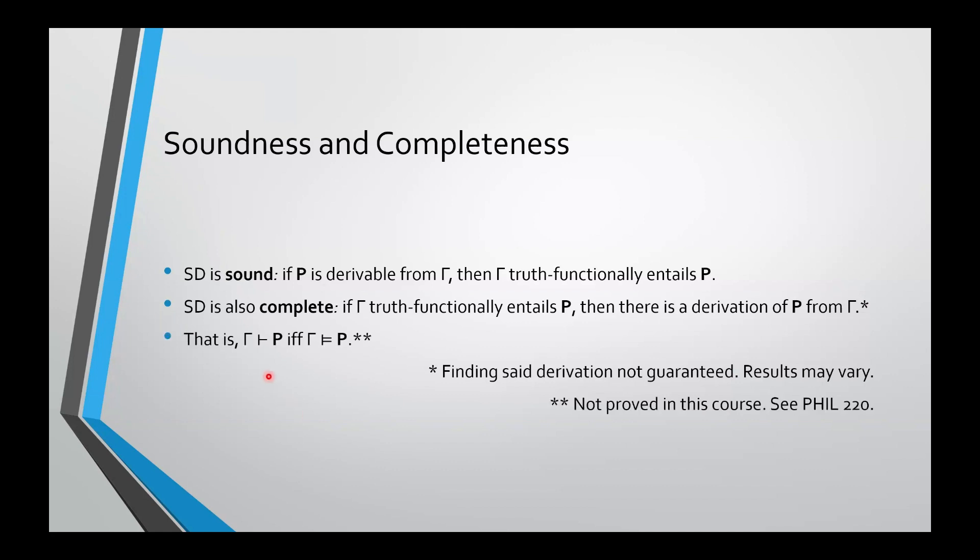So the relationship between these two is that they're actually materially equivalent. P is derivable from gamma if and only if gamma truth functionally entails P. We do not prove that in this course. It is proved in Phil 220.